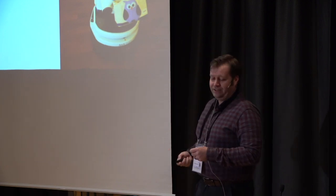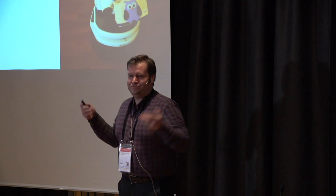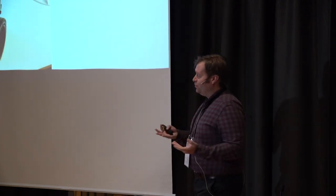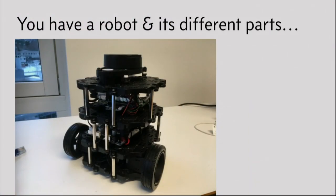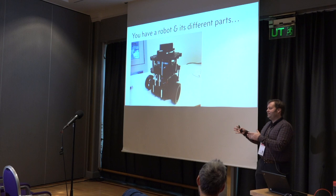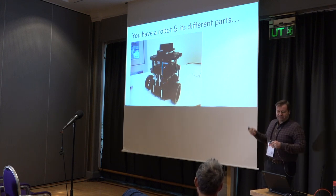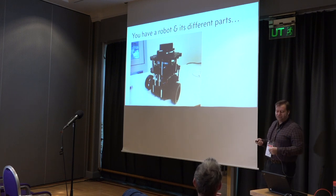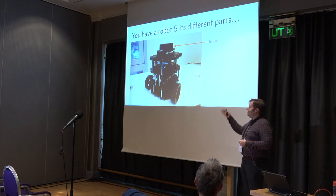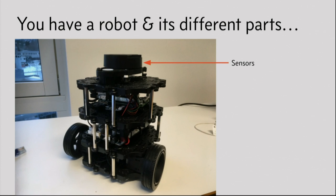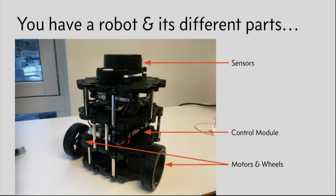First I'll talk about why you'd actually need some sort of robot operating system. If we look at a robot - this is a TurtleBot 3, which moves around and can sense its environment - it has several parts. It has a LiDAR sensor to figure out where it's going, motors and wheels to move around and turn, a microcontroller that controls the wheels and sensor, and a CPU that is the brain of the robot.